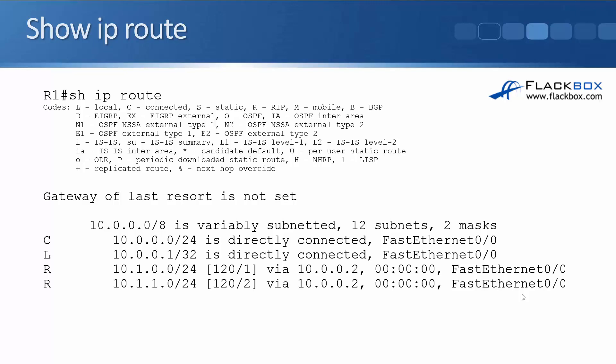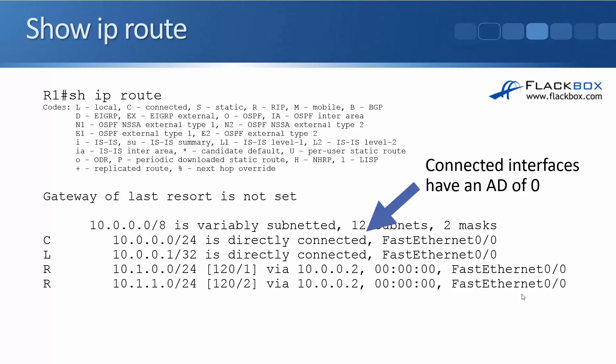We can see what's happening with a show IP route command. Show IP route shows us what routes made it into the routing table. Connected routes have an administrative distance of 0, so they're always most preferred. We've also got some routes learned from RIP. The digits in square brackets show the administrative distance and the metric — the first value is the AD, which for RIP is 120, and the second value is the metric. Here the first route has a hop count of 1 and the second has a hop count of 2.